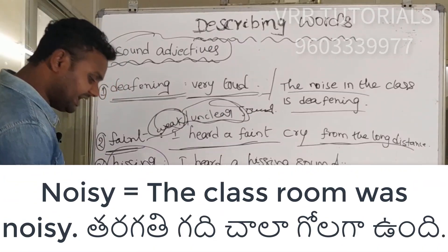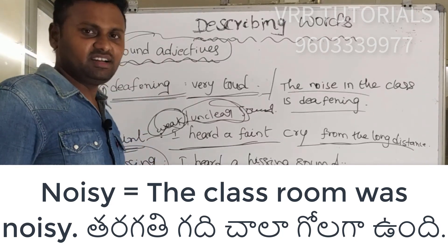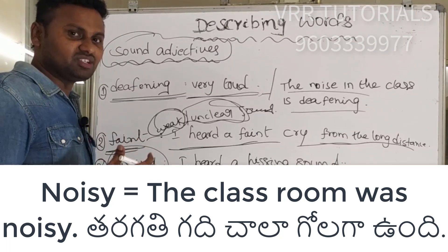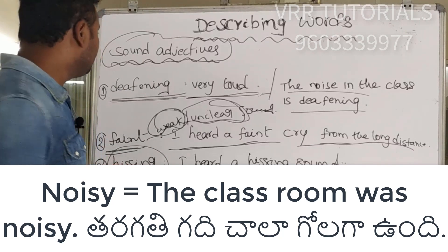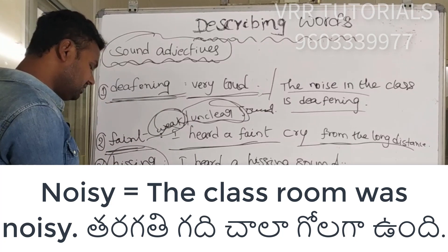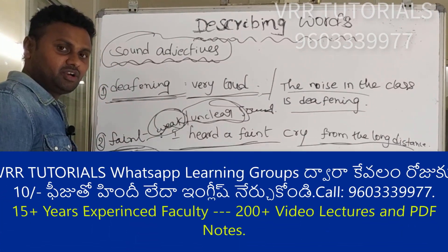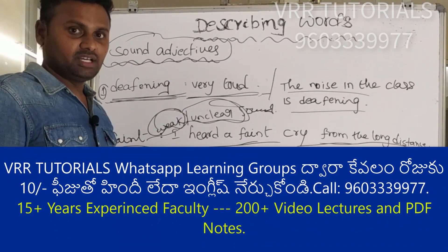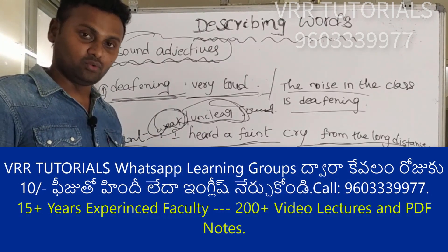N-O-I-S-Y — noisy. The classroom was noisy. So, here we have six words: deafening, faint, hissing, loud, melodic, and noisy. If you want to review them, please repeat the video and watch. If you have any queries related to this video, please post in our query group. Thank you very much.